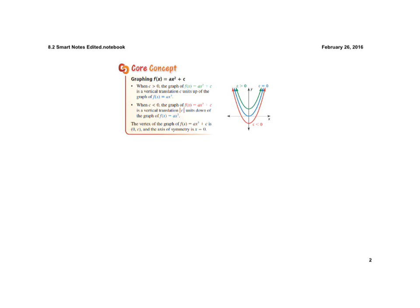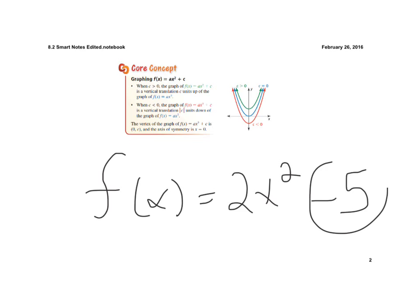First of all, the core concept is graphing f of x equals A times x squared plus C. We've already talked about how the value of A affects the graph. And so what we're showing you now is if we have a plus C at the end, then it's going to shift the graph up. That's a vertical shift up, as you can see by the green graph. Now, if the C is being subtracted or is a negative, so if we had f of x equals 2x squared minus 5, this minus 5 would make it go down. If we wrote it as plus a negative 5, then the C would be less than 0, and that would mean that the graph would be shifted down 5 units.